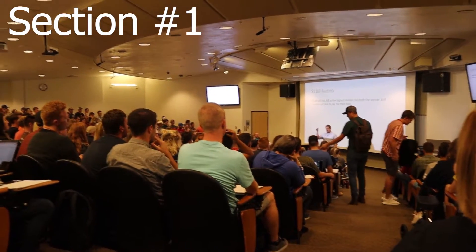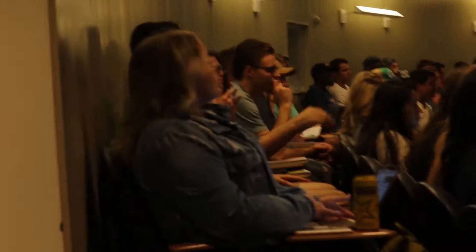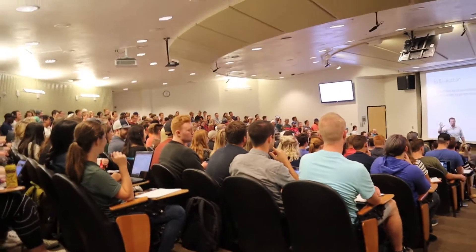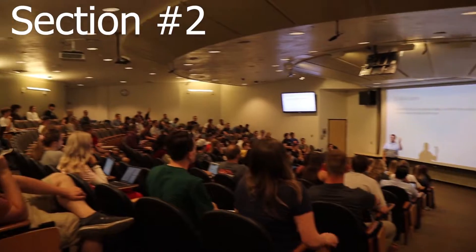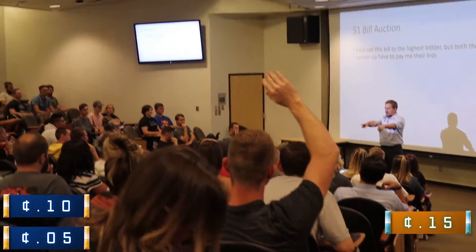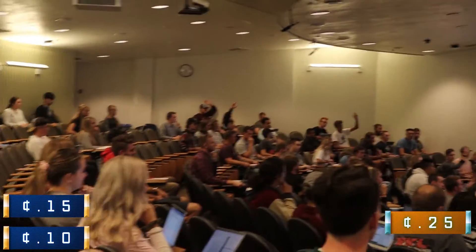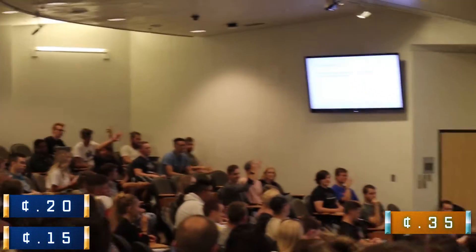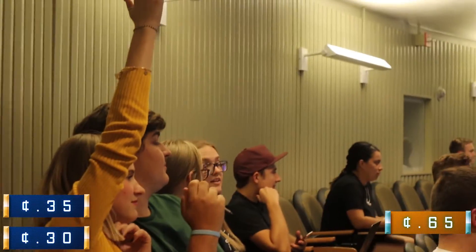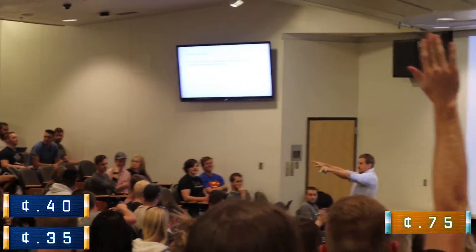I will start the bidding off at 5 cents. Do I have 10 cents? I do take Venmo. I'm going to show you the final outcome of these auctions, but there are three points where I'm going to pause and explain some interesting observations so you can see the economics of how this auction is evolving. Who would like to bid 5 cents on my dollar bill? We've got 10 cents, 15 cents, 20 cents, 25 cents, 30 cents, 35 cents, 40 cents, 45 cents.